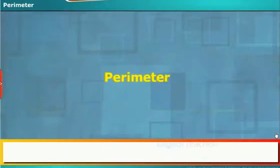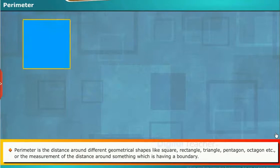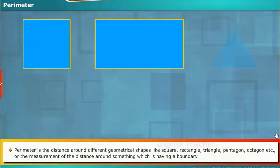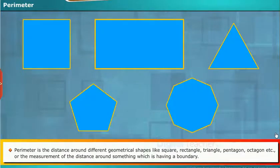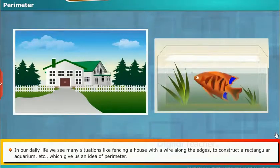Here we shall learn about perimeter. Perimeter is the distance around different geometrical shapes like square, rectangle, triangle, pentagon, octagon, etc. Or the measurement of the distance around something which is having a boundary. In our daily life we see many situations like fencing a house with a wire along the edges, to construct a rectangular aquarium, etc., which give us an idea of perimeter.